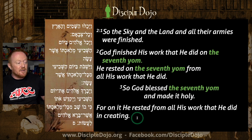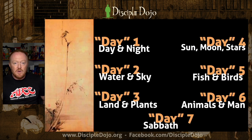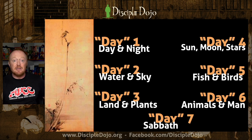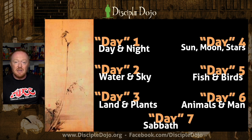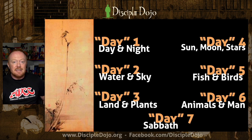Verse three: God blessed the seventh yom and made it holy — sanctified it. For on it he rested, he ceased from all his work that he did in creating. On this yom we see God, the divine craftsman, the heavenly worker, who's been going about his heavenly work week — working each day, then evening, then morning when you would sleep — six days, and then the seventh is rest, intentionally ceasing from the work the text presents him as engaging in. This is how the Genesis one creation account ends.